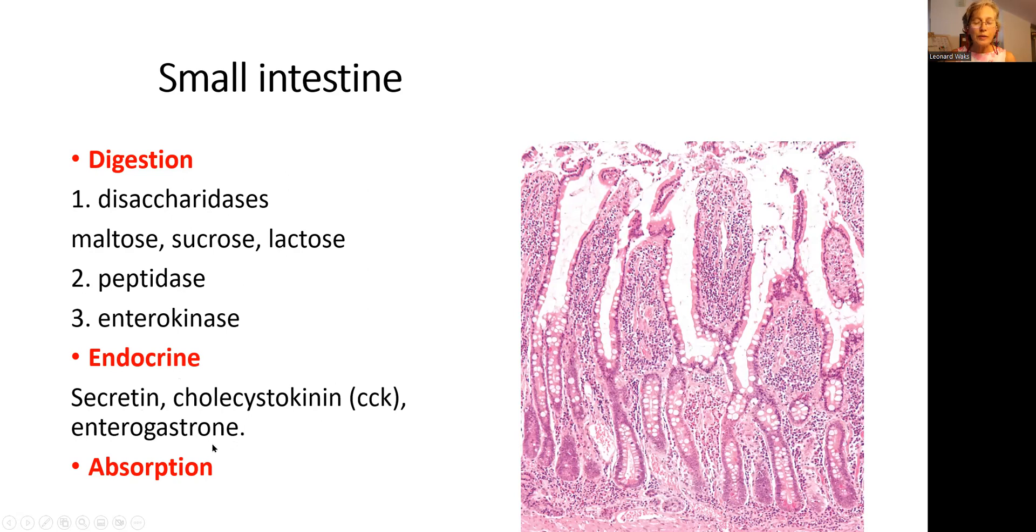Endocrine function is performed by secretin, cholecystokinin (CCK), and enterogastrone. When the food is broken down by these digestive enzymes into smallest particles, it will get absorbed through the surface of those villi and will go into the bloodstream. That's called absorption.